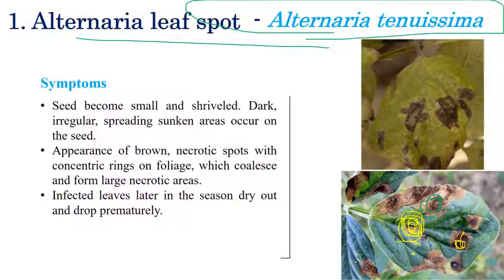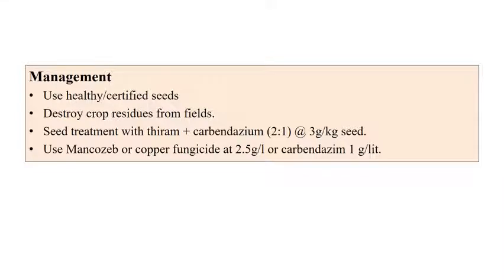Later the spots coalesce and look like a very large necrotic area. Infected leaves also dry and drop prematurely. Coming to the management aspects: use healthy and certified seeds and destroy the crop residues from the fields. Seed treatment with thiram or carbendazim at a 2:1 ratio at the rate of 3 grams per kilogram of seeds is recommended.